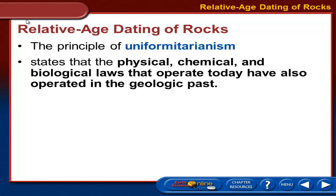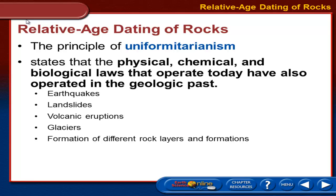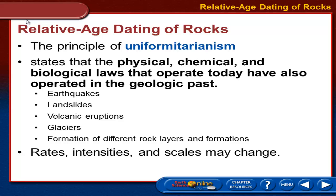Relative dating is based on one main principle called the principle of uniformitarianism. This basically states that the physical, chemical, and biological laws that operate today also operated in the geologic past. For example, we can look today and see earthquakes, landslides, volcanic eruptions, glaciers, different rock layers and formations — all being created and destroyed today. Those processes we can see today we think happened in the past. What could have possibly changed were the rates, intensities, and scales.